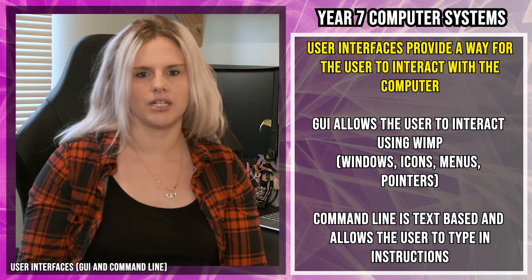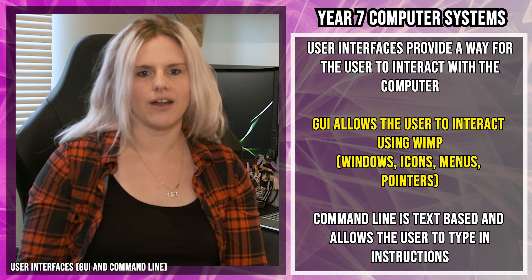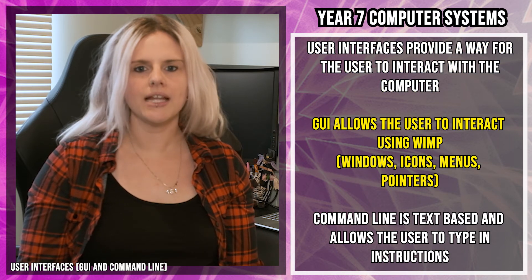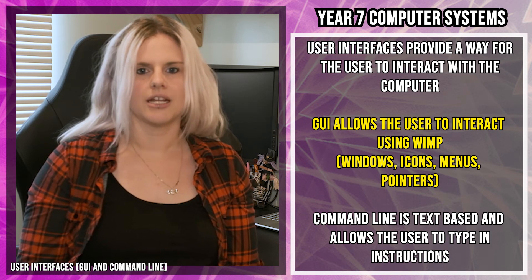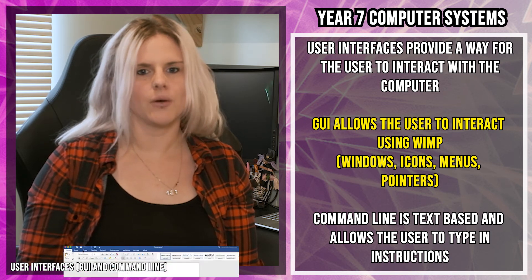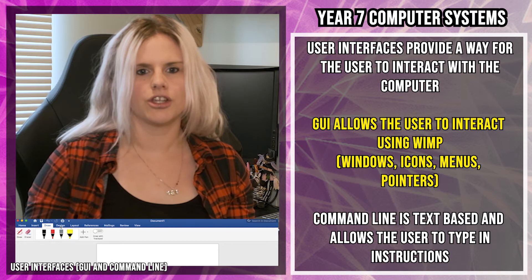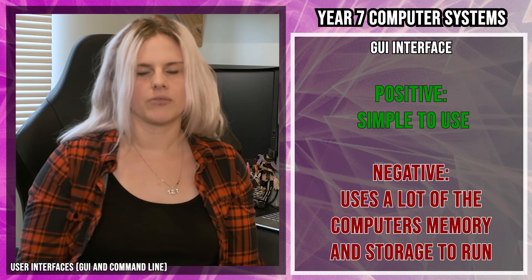There are two main types of user interface. The first is GUI, which stands for Graphical User Interface. GUI allows the user to interact with the computer using WIMP, which stands for Windows, Icons, Menus, and Pointers. GUI has lots of pictures, you can click on them, and it's really straightforward and simple to use.